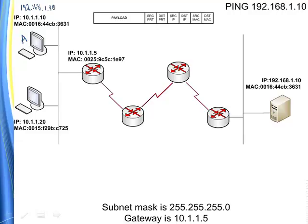The local computer looks at the first octet and compares it to its own — and immediately stops. It sees this is not the same; this is on a remote network. So immediately, computer A does an ARP, but not for the destination IP. It ARPs for its gateway. The gateway we're assuming here is 10.1.1.5, and the local router is going to reply back with its MAC address.